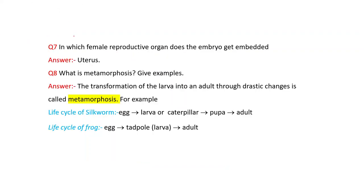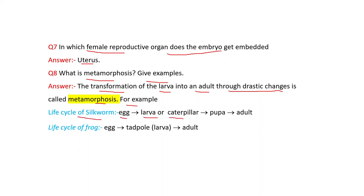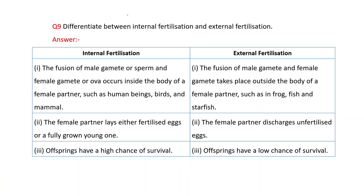Next question: In which female reproductive organ does the embryo get embedded? Answer: uterus. What is metamorphosis? Give examples. The transformation of the larva into an adult through drastic changes is called metamorphosis. For example, the life cycle of a silkworm: egg → larva/caterpillar → pupa → adult. Life cycle of a frog: egg → tadpole → adult.